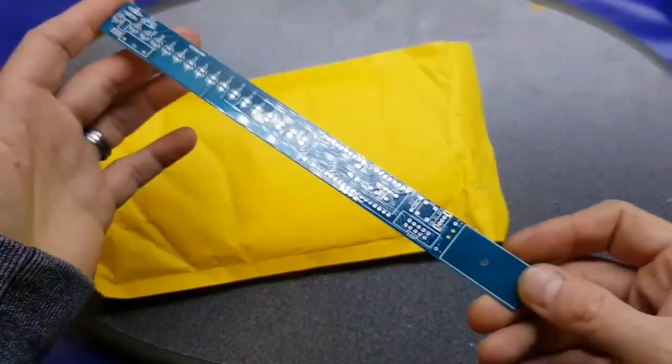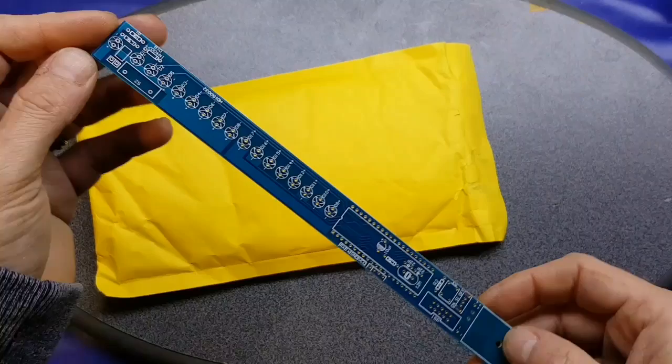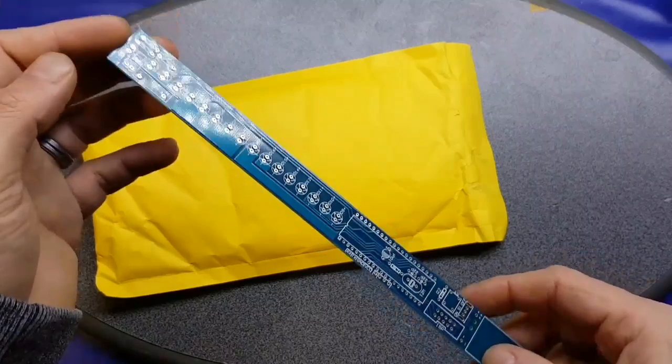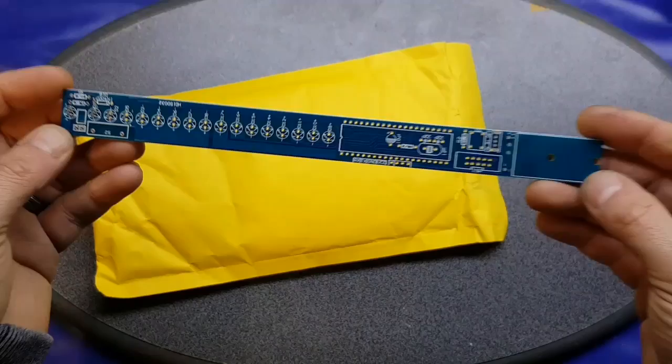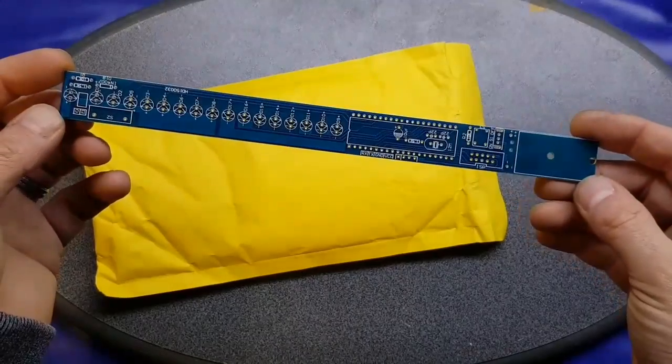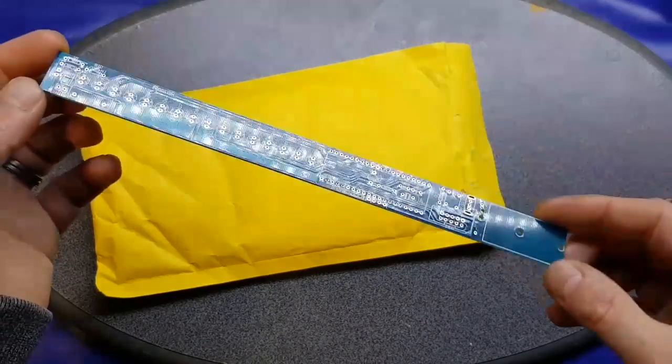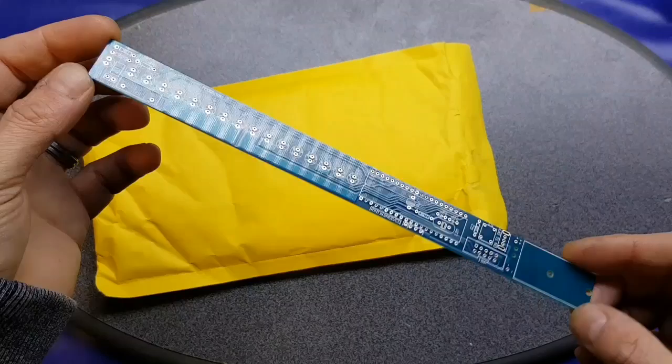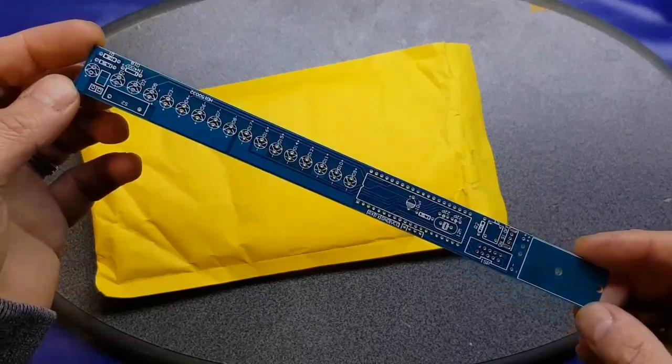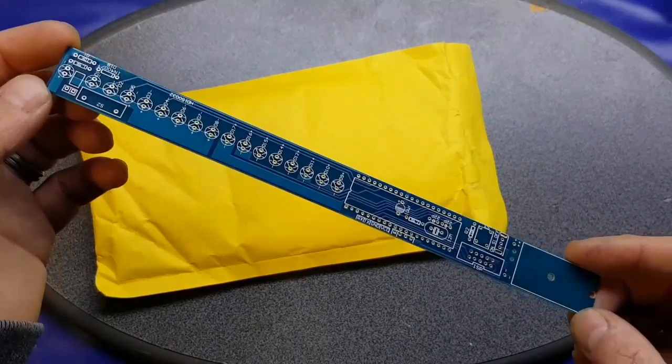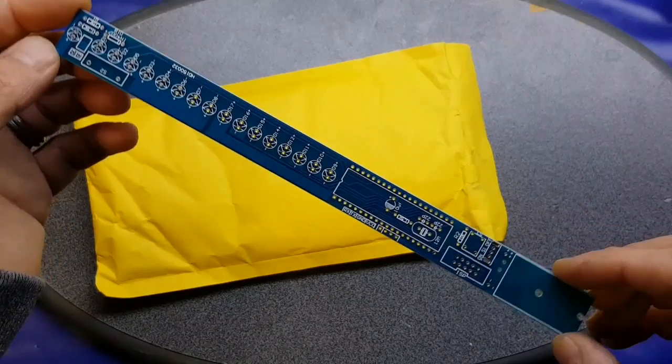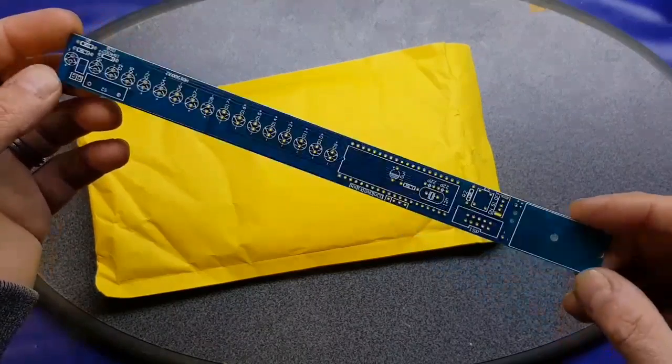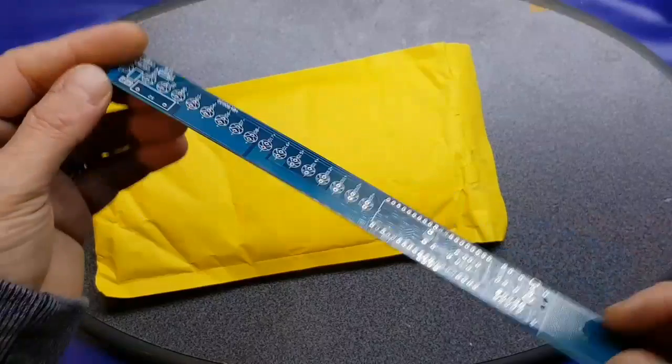And what this is, or what you or I would describe this as, is a POV wand or a POV stick, persistence of vision stick. Of course, in typical AliExpress naming conventions, they have not called it something simple like that. They have described this as LED shook his stick kit, flash the wand stick, microcontroller for AT89S5251DIY RED. Yeah, it's a POV wand.